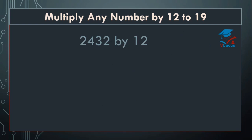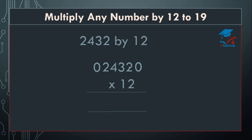Let us go to the next sum: multiply 2432 by 12. The method is the same — insert a 0 on the right hand side and a 0 on the left hand side. Multiply 2 by 2: 4 plus 0 equals 4. Cut 0. 2 threes are 6 plus 2 equals 8. Cut 2. 2 fours are 8 plus 3 equals 11. Write 1, and 1 will be carried over.